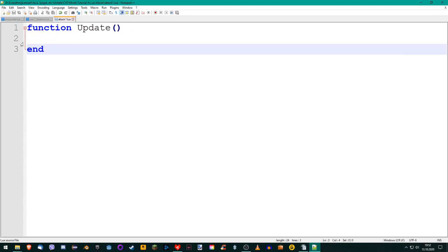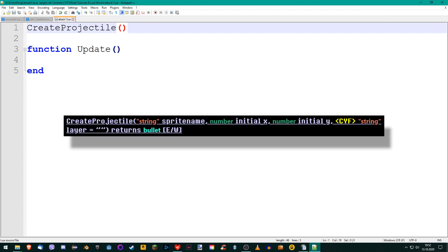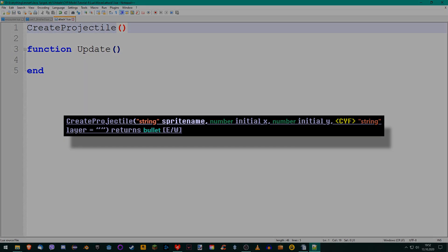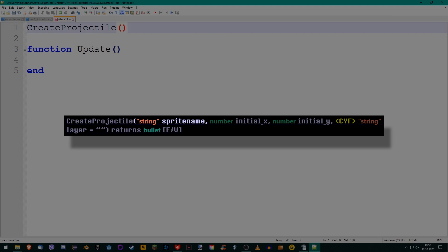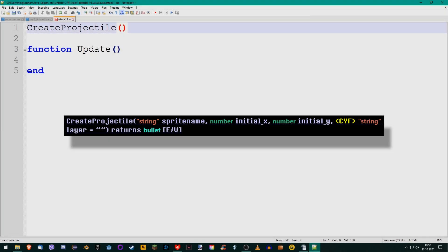Let's finally spawn a bullet. To create a bullet, use the function createProjectile. Add it before our update function, because we only want to create the bullet once and not every frame. Looking at the documentation, it becomes clear that the function needs three arguments. First, the name of the sprite the bullet will use. And lastly, the spawn coordinates x and y. Let me explain all three arguments in more detail.